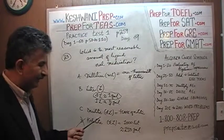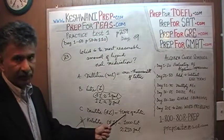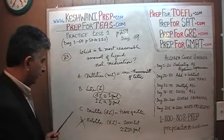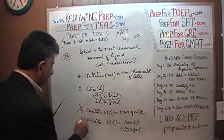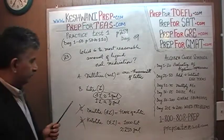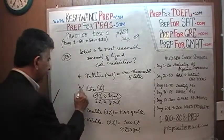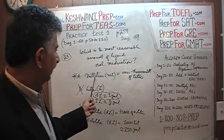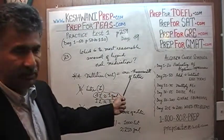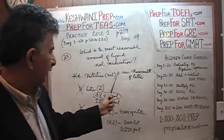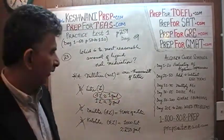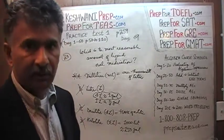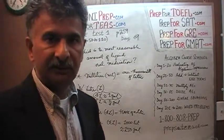Similarly, a deciliter is a tenth of a liter. That's still too much — a tenth of a liter is way too much medication. And of course, you are definitely not going to give them a liter. The answer, of course, is milliliter. Milli means 1,000, so a milliliter is 1/1,000 of a liter. So, 5 milliliters, 10 milliliters, something like that.